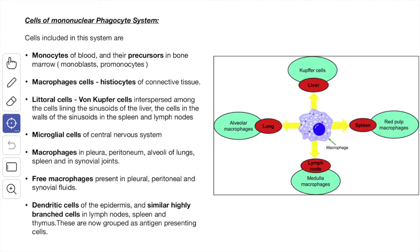The dendritic cells of the epidermis and similar highly branched cells in the lymph node, spleen and thymus are now grouped as antigen presenting cells. So these are the various cells which are included in the mononuclear phagocyte system.